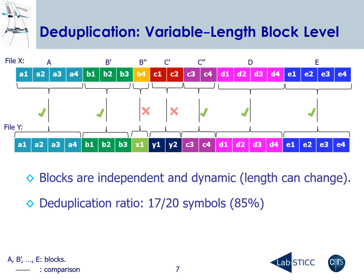In the variable-length block level approach, blocks are independent but also dynamic, which means the length of blocks can be adapted to deduplicate more information. As we can see in this example, blocks B and C are divided into two sub-blocks — B', B'', C', and C'' — to compare and match the duplicate parts with the compared ones. This leads to an increase in the deduplication ratio by 10% compared to a fixed-length block level approach.